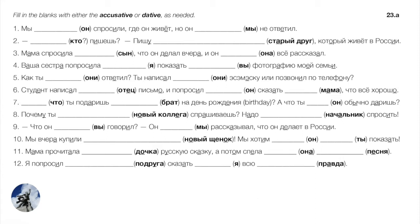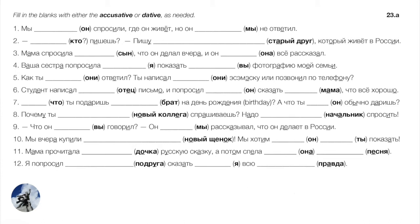Number seven: blank ты подаришь брат на день рождения — what will you give to your brother for his birthday? The question word что is the direct object — accusative, so it won't change. Что ты подаришь? But брат is the indirect object — we're giving something to him for his birthday, so dative: брату. Что ты подаришь брату на день рождения?